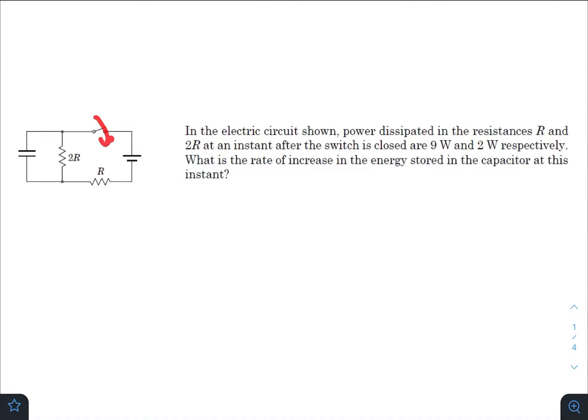After turning on the switch, current flows through the battery to both resistances and the capacitor. There is some heat dissipation mentioned in the question at any instant. We need to find at what rate the energy in the capacitor is increasing.